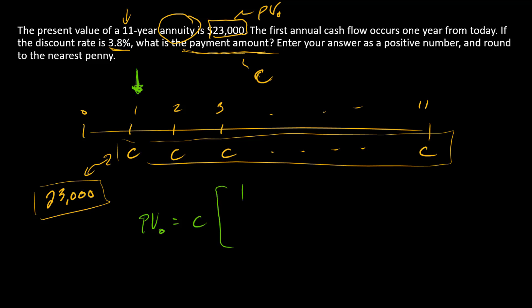We're trying to find C, so how do we do that? We just divide PV by the annuity factor.